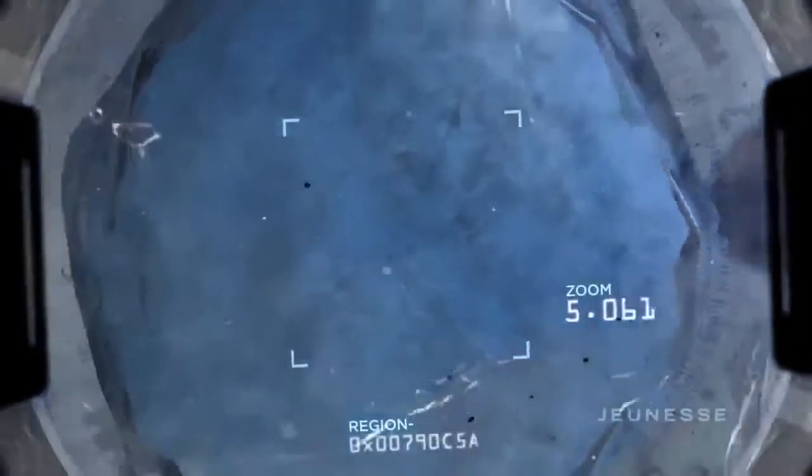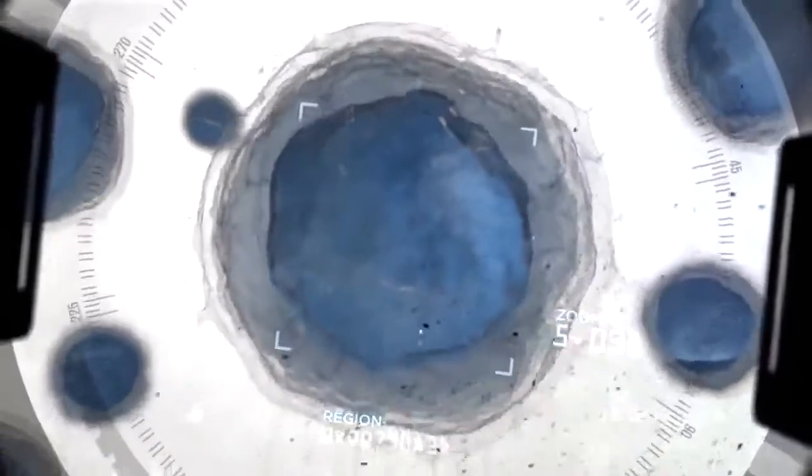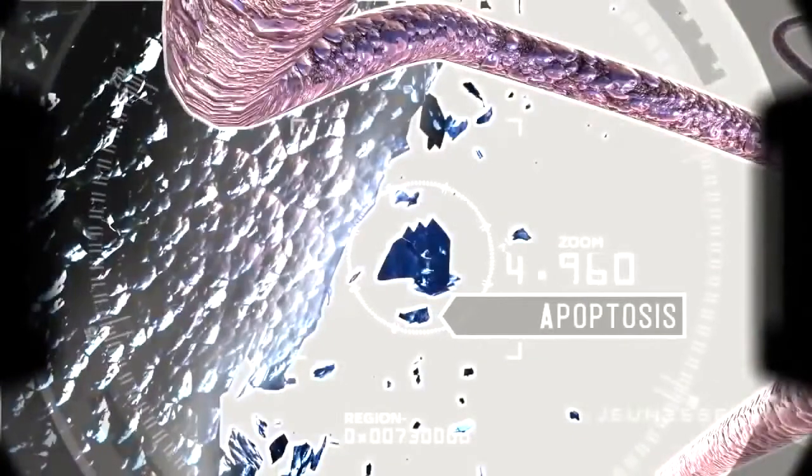When telomeres become too short, our cells can no longer carry out their critical functions. Cells start to self-destruct and eventually die. Scientists call this apoptosis.